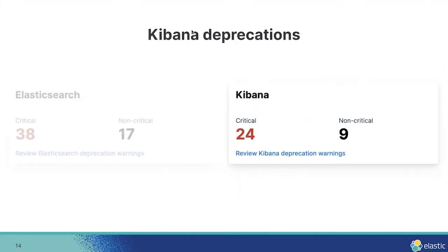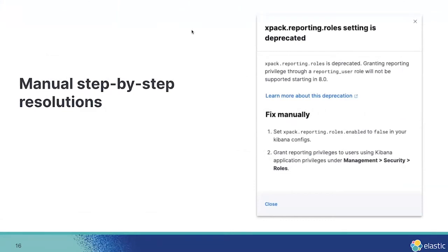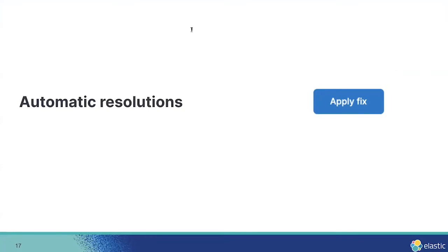So far we've covered Elasticsearch deprecations, but deprecations can come from Kibana too. That's why in this version of Upgrade Assistant we've added a great new feature that shows you information about deprecation issues in Kibana and helps you resolve them. When you click that panel, you'll see a table listing all the deprecation issues related to Kibana, with information about status, severity, and whether the resolution involves a manual or automated step. Many Kibana issues can't be resolved automatically, but Upgrade Assistant will list the steps you need to take and link you to relevant documentation. And for some Kibana deprecations, there will be an automatic resolution — Upgrade Assistant will give you a button you can click to resolve it automatically.